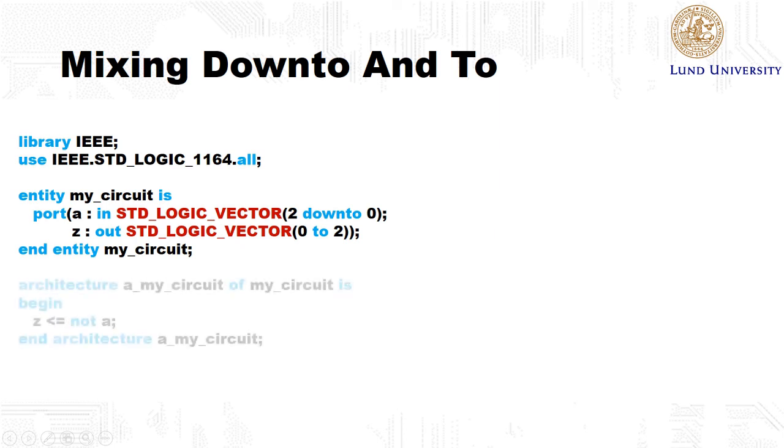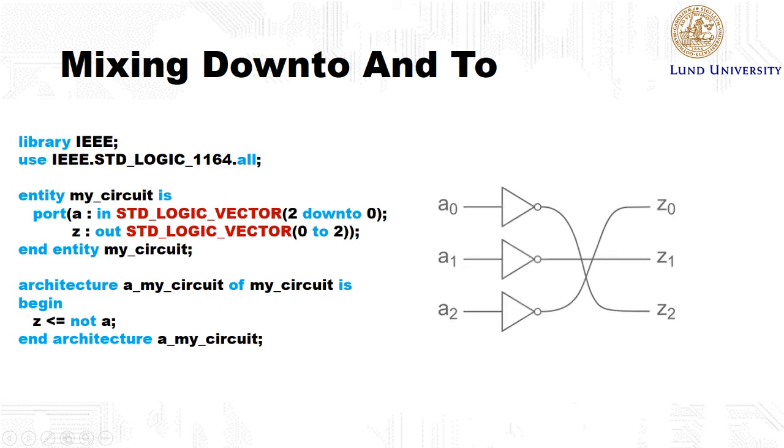So if we now assign set the inverse of A, we might not get what we expect. Because we have declared them in the opposite order, set 0 will be the inverse of A2 and so on. So be really careful if you have both of these in your description. And I would recommend you to stick to one of them and preferably the down to as this is the most commonly used in VHDL.